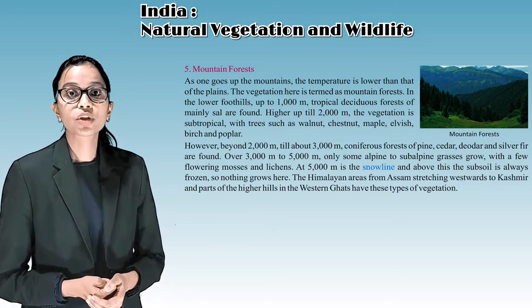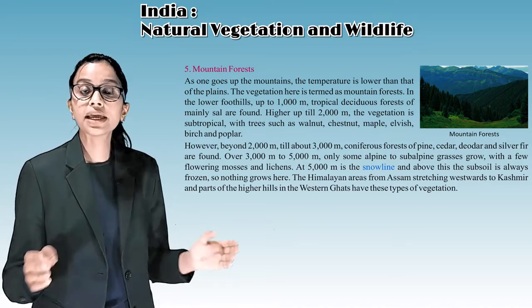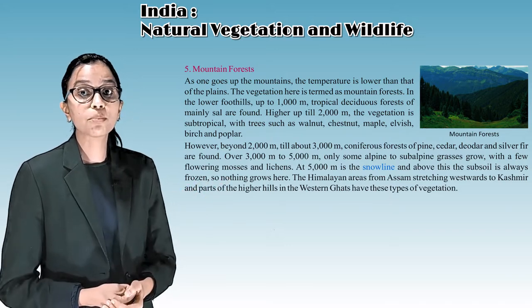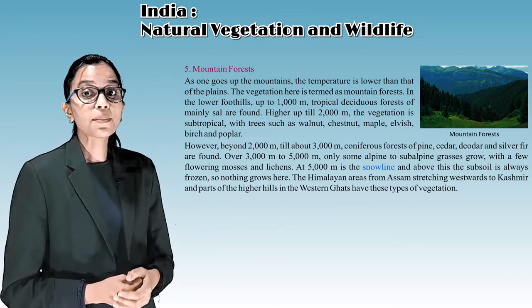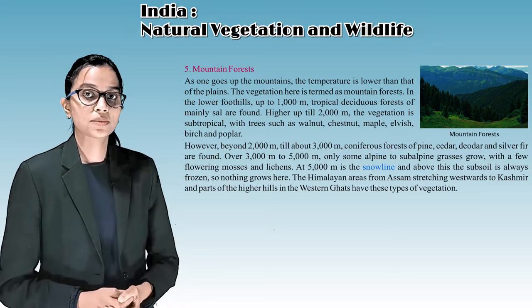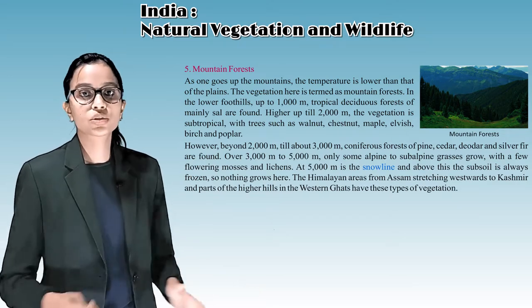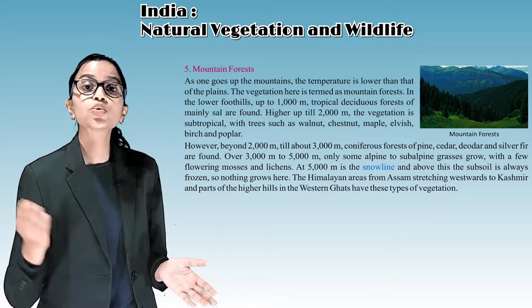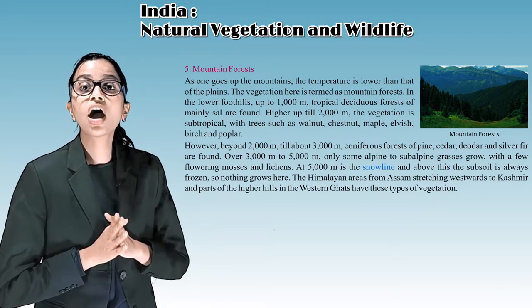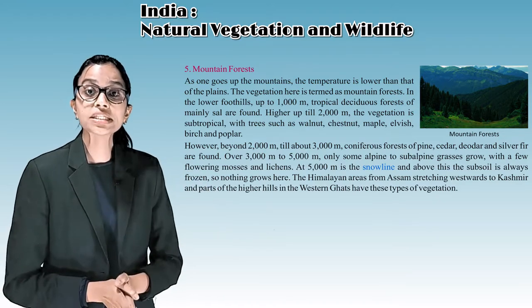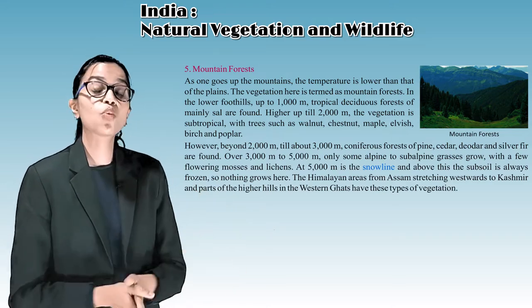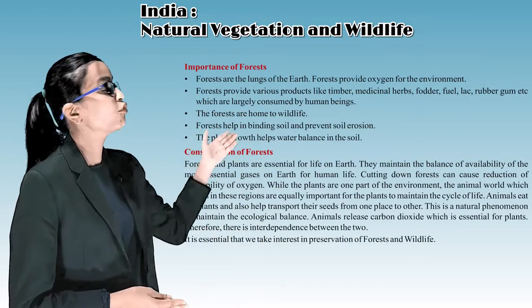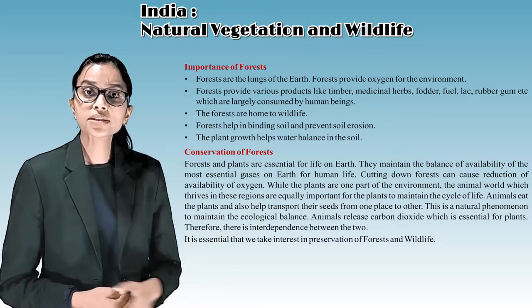Over 3,000 meters to 5,000 meters, only some alpine to subalpine grasses grow, with a few flowering mosses and lichens. At 5,000 meters is the snow line, and above this the subsoil is always frozen so nothing grows. The Himalayan areas from Assam stretching westward to Kashmir and parts of the higher hills in the Western Ghats have these types of vegetation.